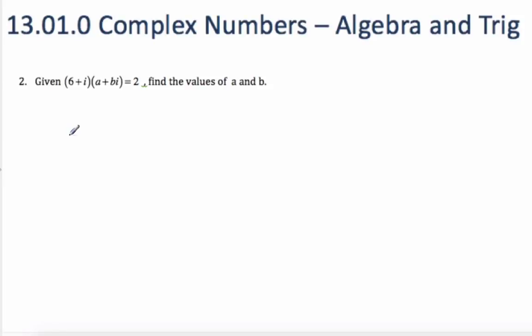Okay, so here's an example using complex numbers in algebra. In order to find a and b, I'm going to multiply this out.